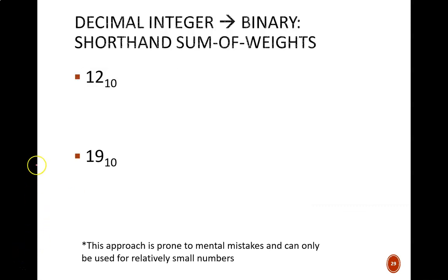The shorthand sum of weights method is a quick approach that involves breaking a given decimal number into pieces that are all powers of two. To do this, it is important to know the first few perfect powers of two, which are 1, 2, 4, 8, 16, and so on.